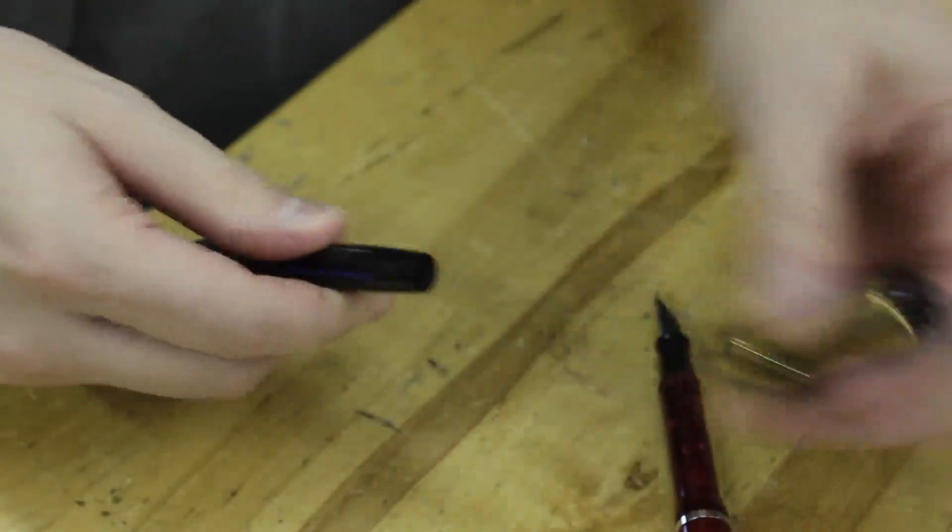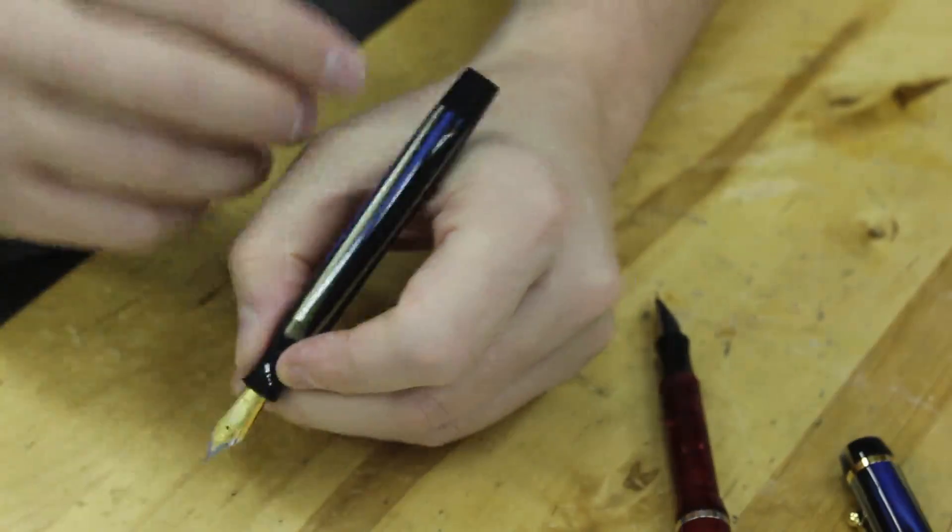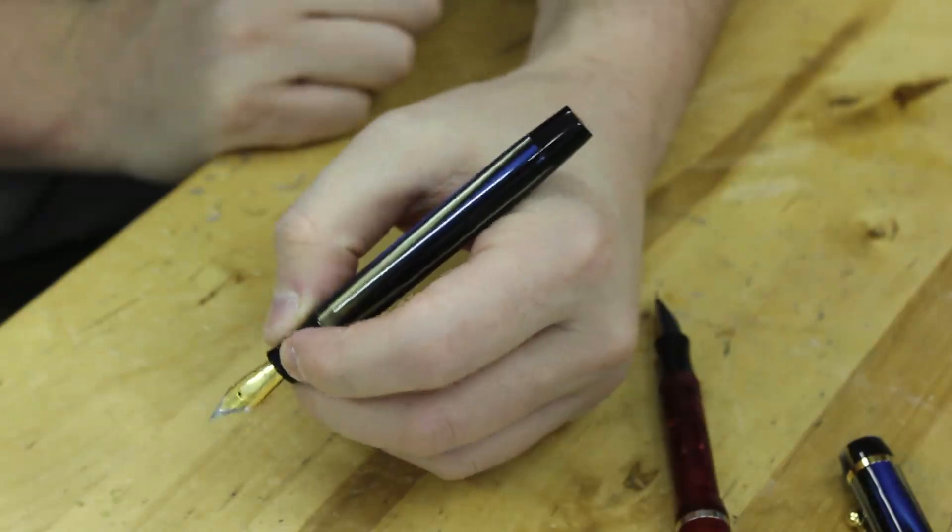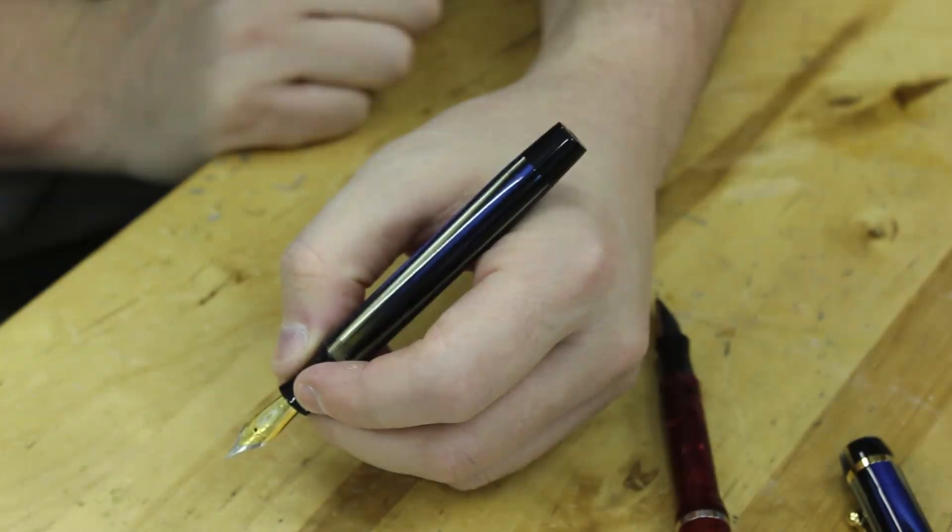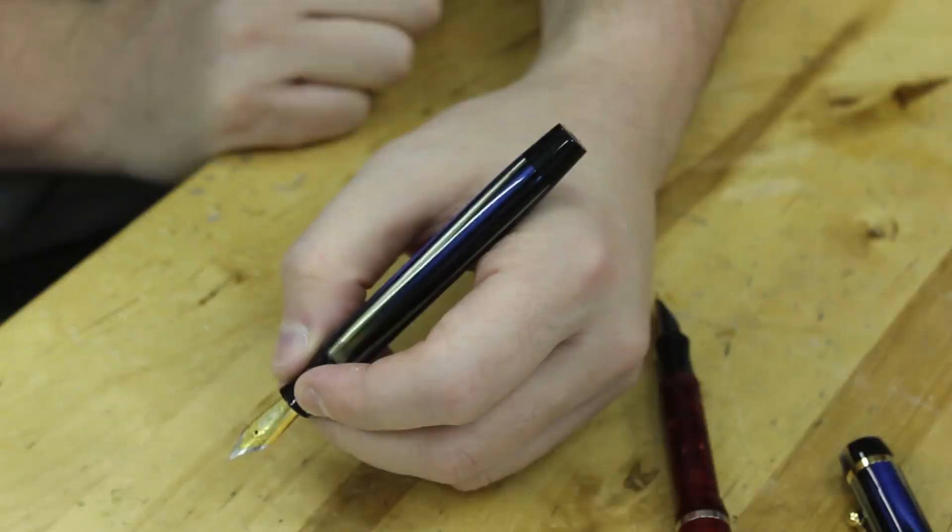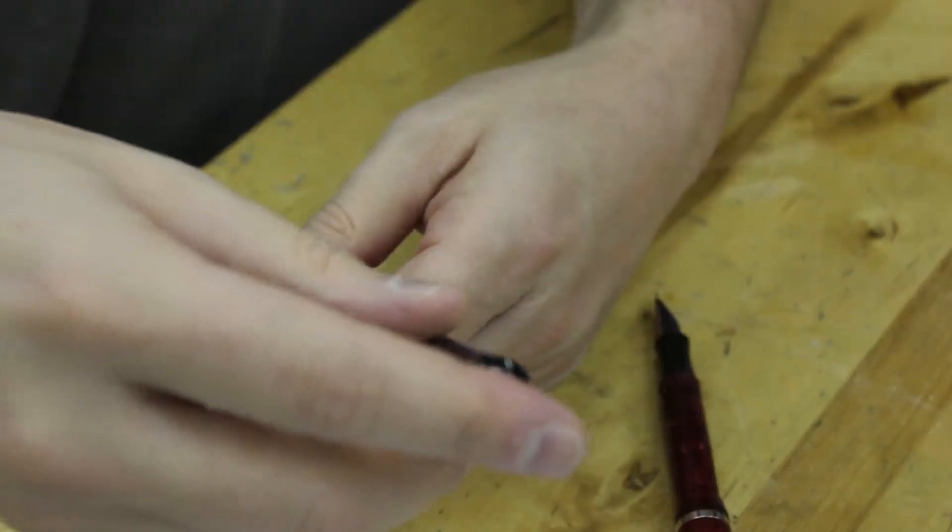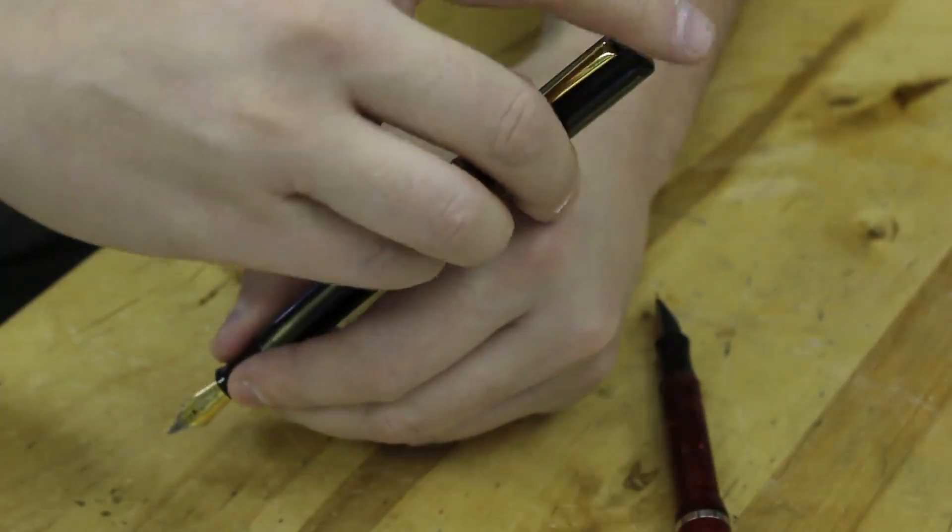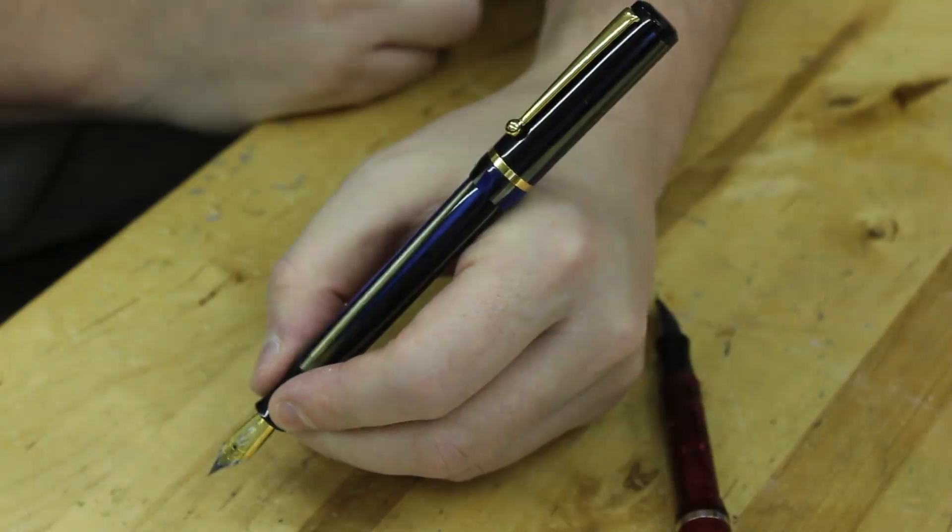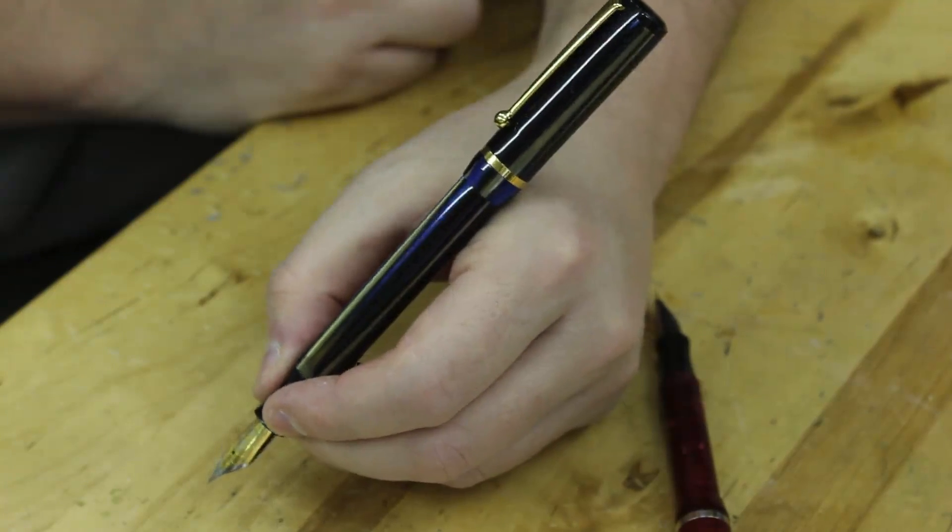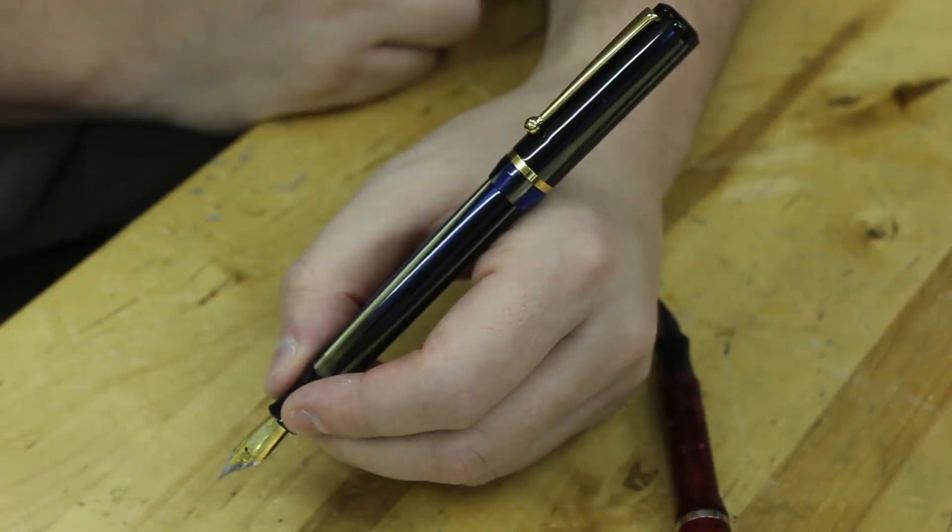So that means that the cartridge converter Beaumont will post where it normally does, and then the pneumatic filling Beaumont will post a bit higher. Now for me this doesn't really give me any obstacles at all. I'm 5'11 with normal sized hands, and the Beaumont feels just fine in my hand, posted or unposted. And when the pen is posted, it's not so high that it's imbalanced. It feels good in my hand either way, quite honestly.